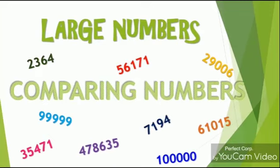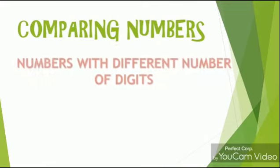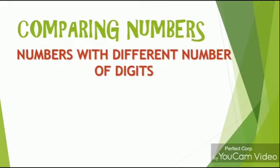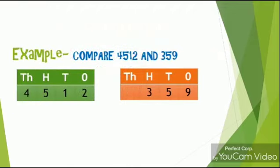The name of the topic is comparing numbers — how to compare numbers. There are multiple ways for the comparison of numbers. The first method: numbers with different number of digits. If the two numbers being compared have different number of digits, then the number with more digits is the greater one. Let's see an example.